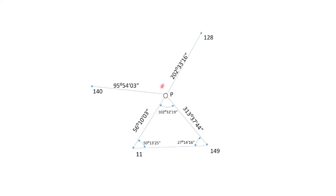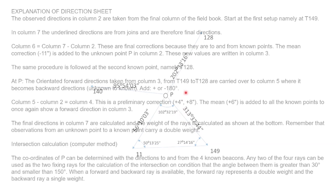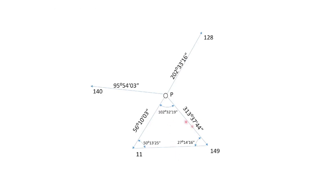Now we have to look for the two directions that have the smallest angle or the angle closest to 90 degrees between them. If you subtract each of these directions from each other, you'll see that T149 and T11 have the difference closest to 90 degrees, so that's the triangle we use. In the triangulation method, since we've already determined our orientated directions, we skip straight to determining our angles. The angle between these two directions is 102 degrees, which is the closest to 90.